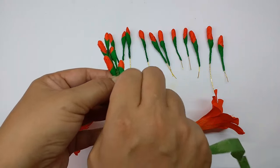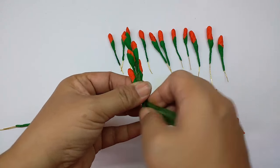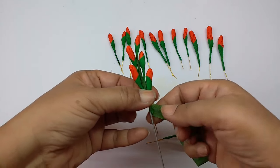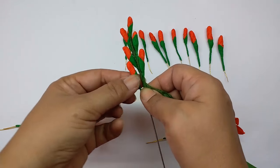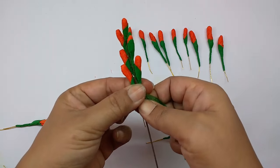Similarly attach the flowers. Each one should come slightly lower than the previous one. Keep on adding buds like this.